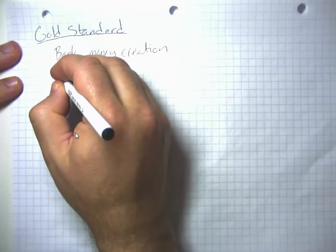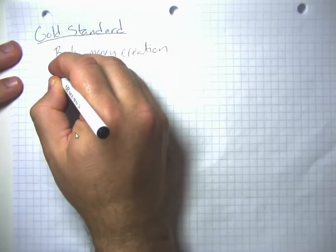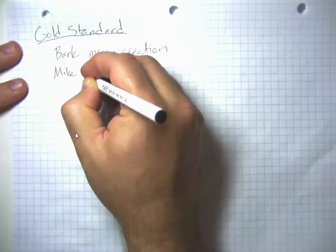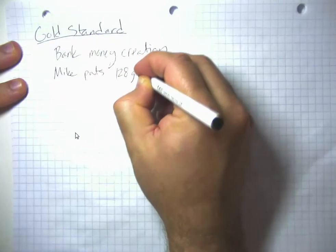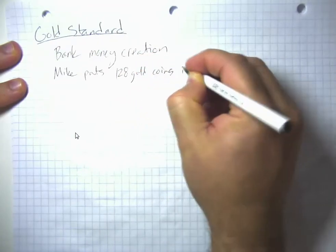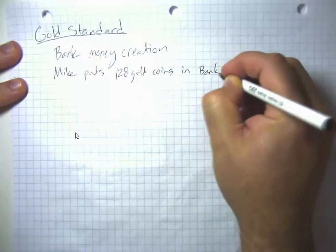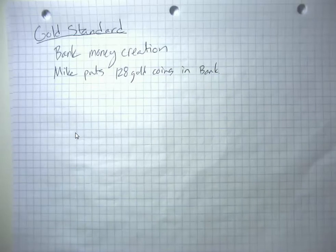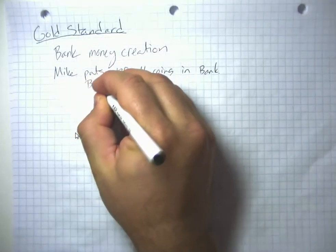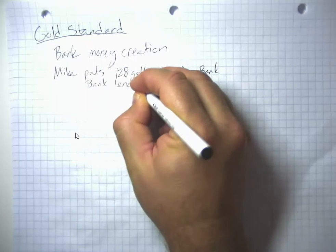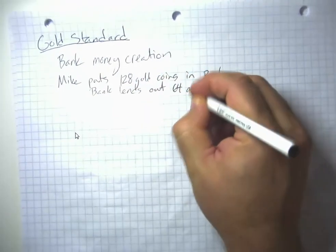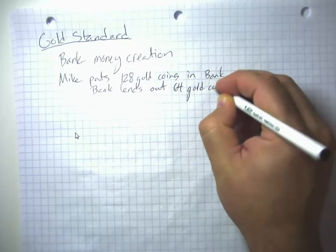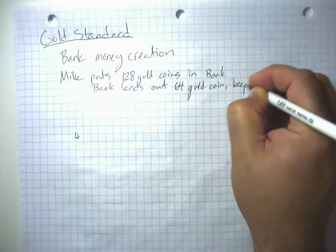So we want to think about what happens when someone puts money in a bank. Suppose Mike puts 128 gold coins in the bank. The bank gives me a receipt and tells me that the balance in my checking account is 128 gold coins. But then they're going to lend out some of that money. So the bank lends out 64 gold coins, keeping the other 64 on reserve.